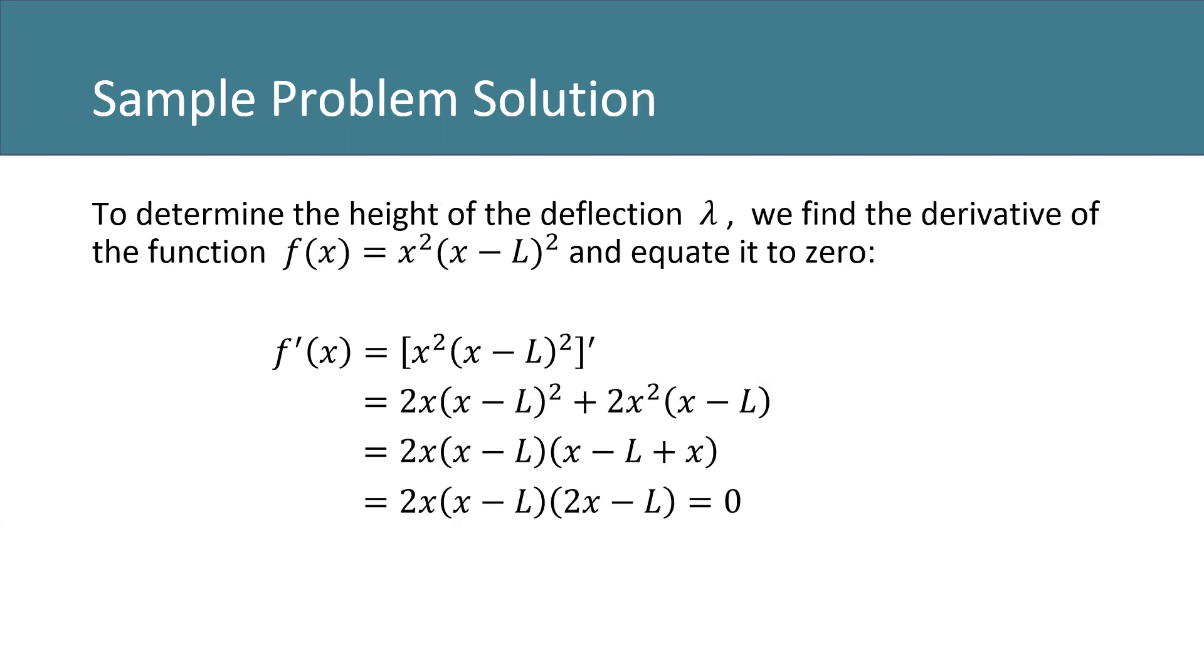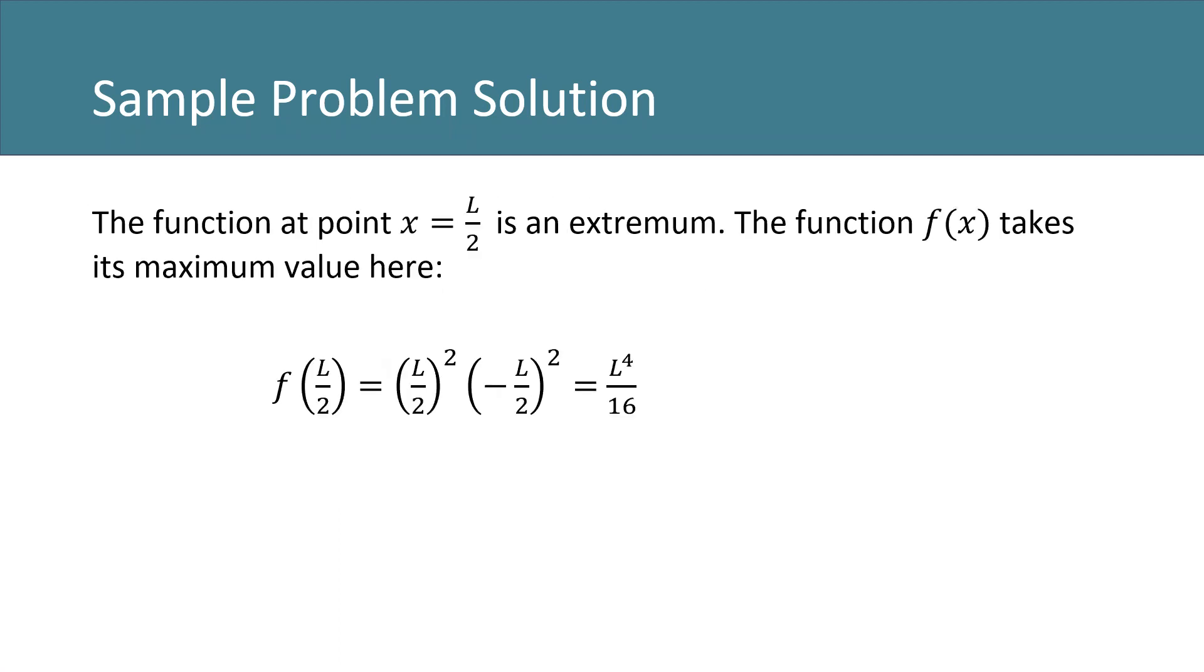To determine the height of the deflection lambda, we find the derivative of the function f of x equals x squared quantity x minus l squared and equate it to 0. The function at point x equals l over 2 is an extremum. The function f of x takes its maximum value here.